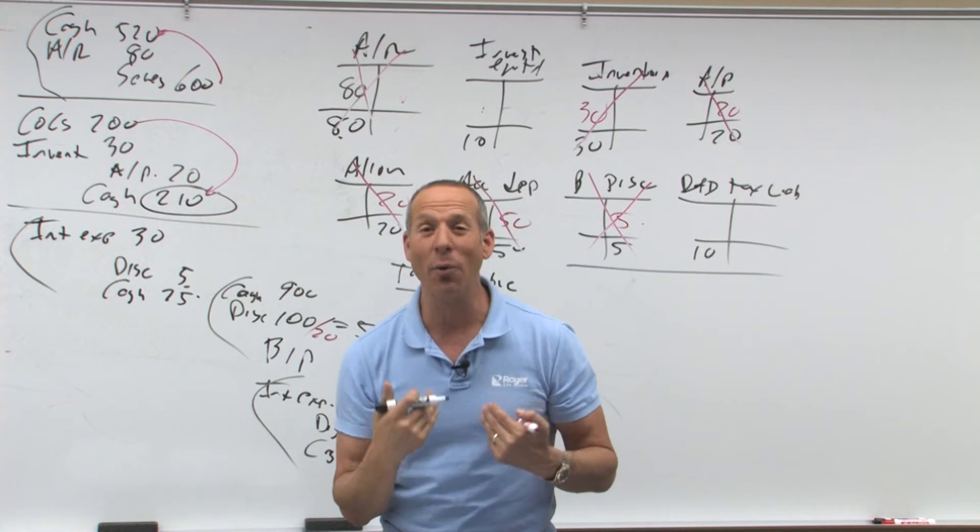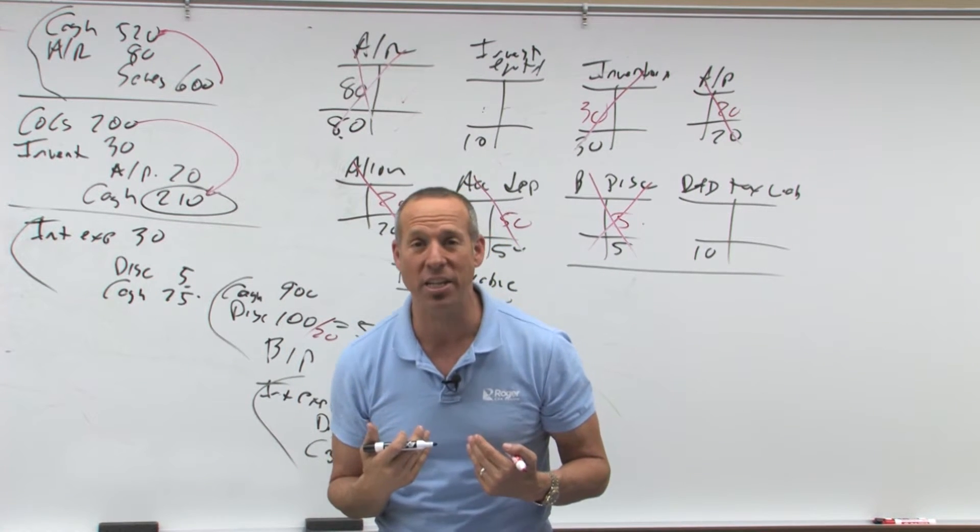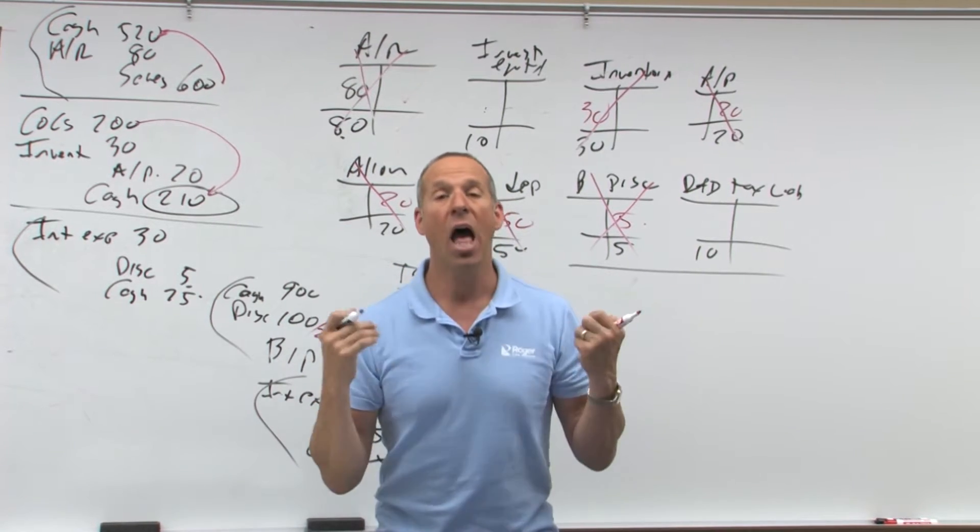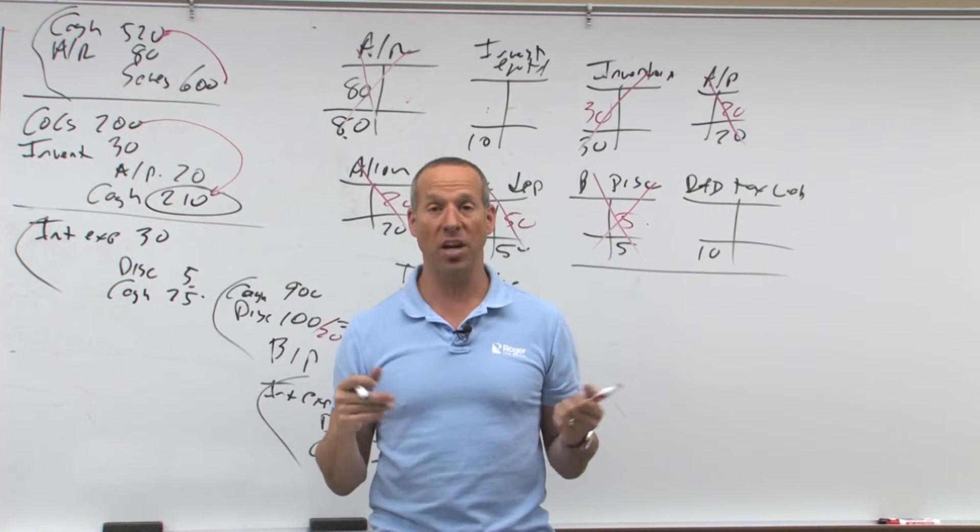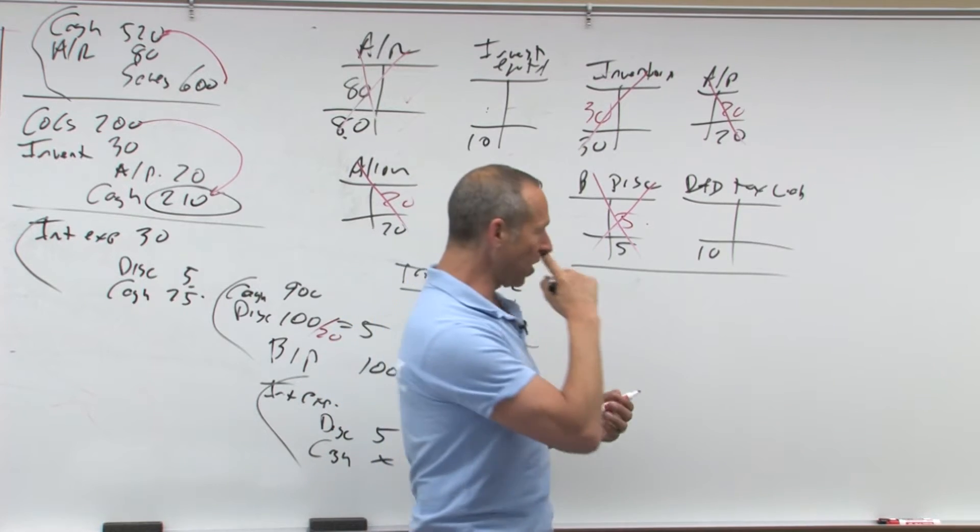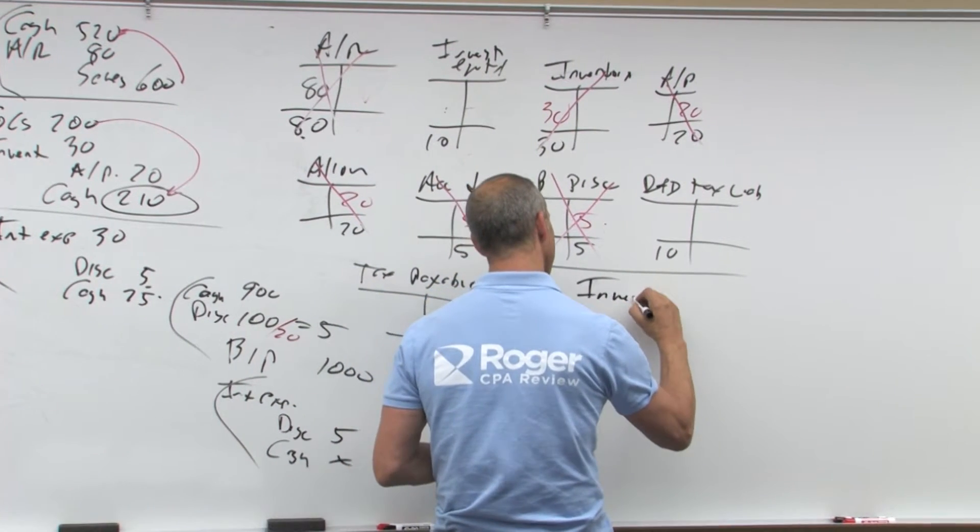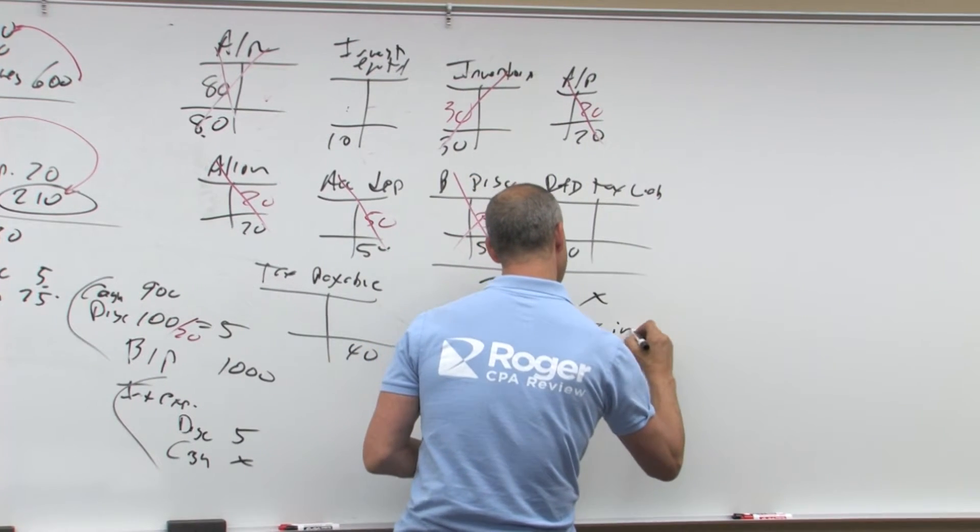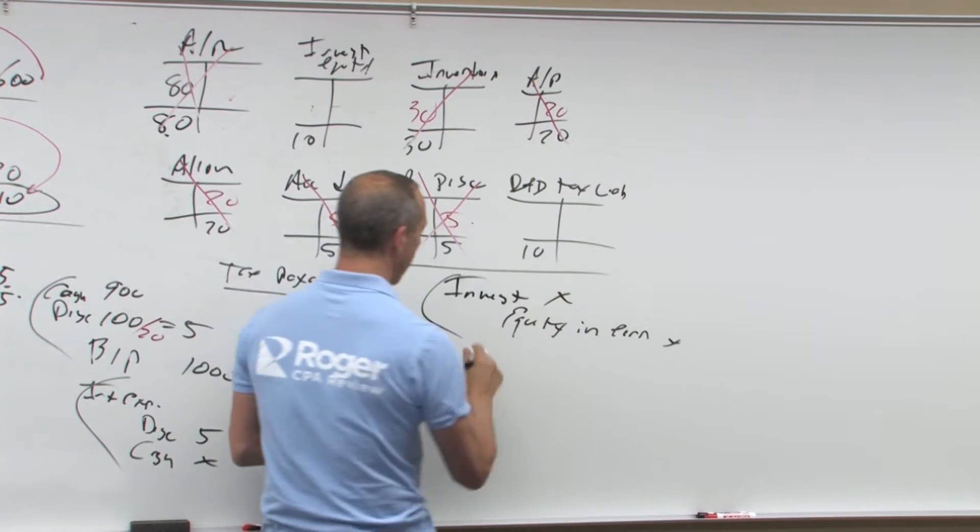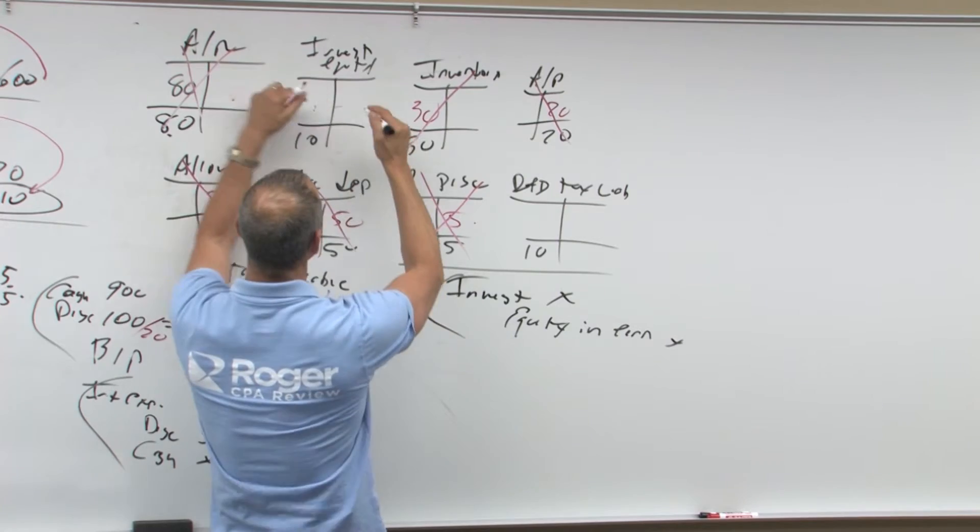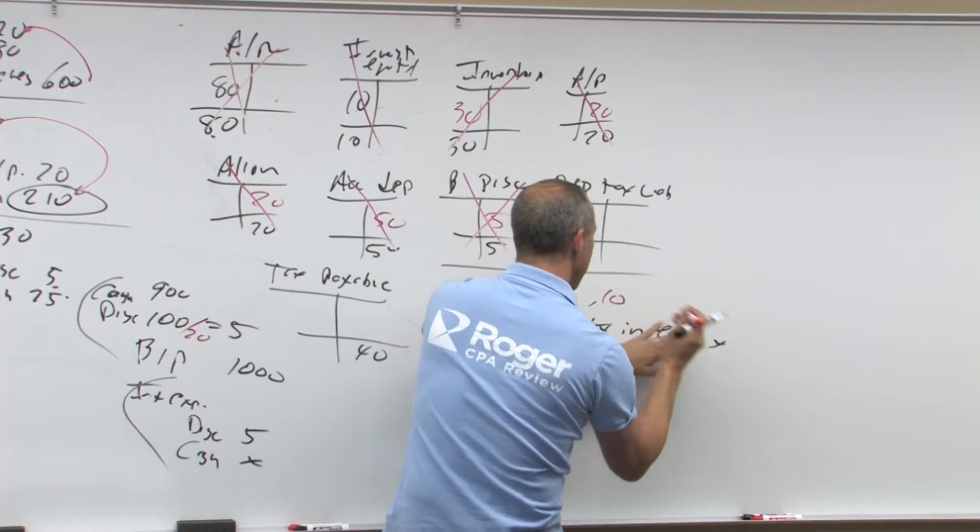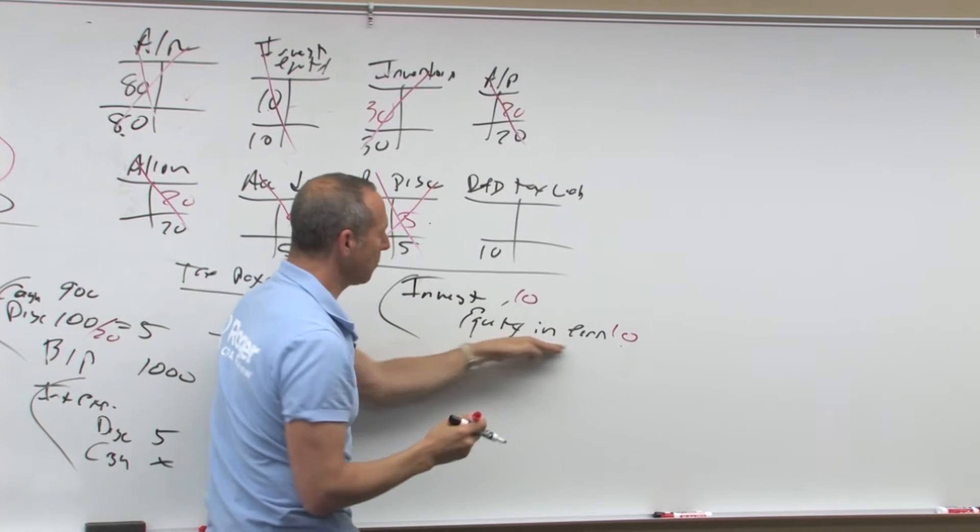Now when you earn it, I record it as income even though I haven't touched it yet. Why? Because I have significant voting influence, 30 to 50%, I'm reasonably assured of getting it in the form of a dividend down the road. So my journal entry is debit investment, credit equity and earnings. Now investment, balance sheet, here it is. Equity and earnings is an income statement account.